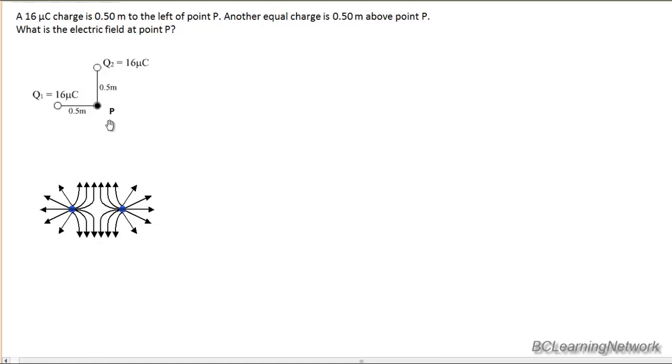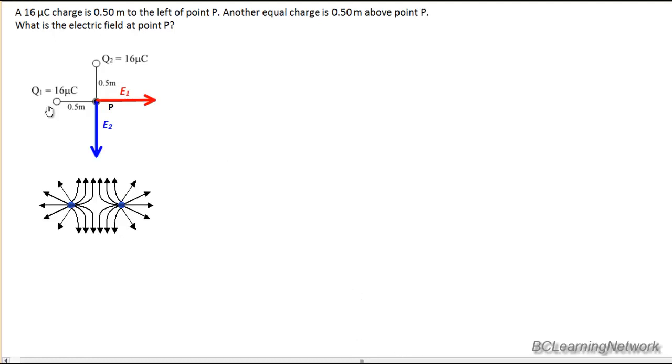So we're going to label our vectors. Our vector for the electric field from Q1 will be in red, and our vector for the electric field from Q2 will be in blue. And we'll sketch those now and explain. So since our field lines always point away from positive, and both these charges are positive, if I look at Q1 alone, so imagine Q2 doesn't exist, at location P my field line will be directly away from Q1 along this red arrow. And I'm going to label that E1 to represent the electric field from Q1.